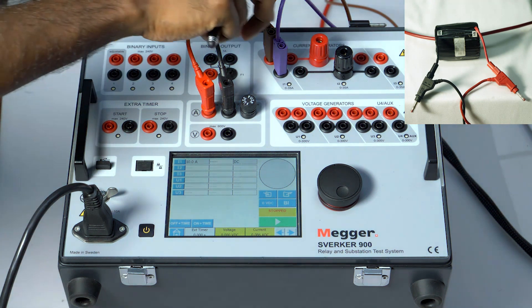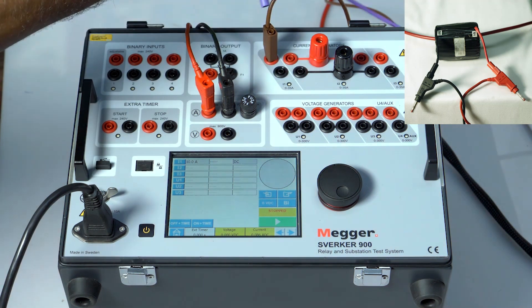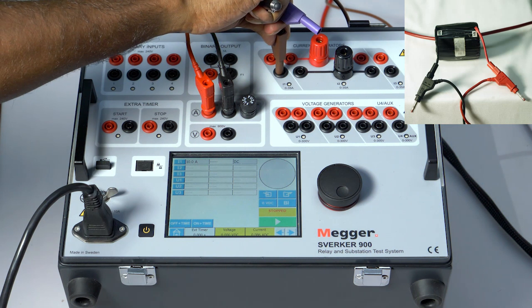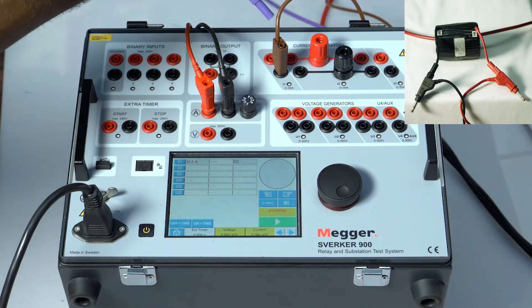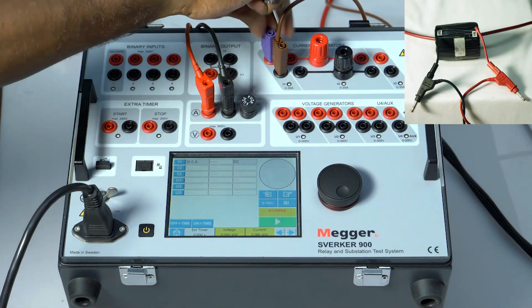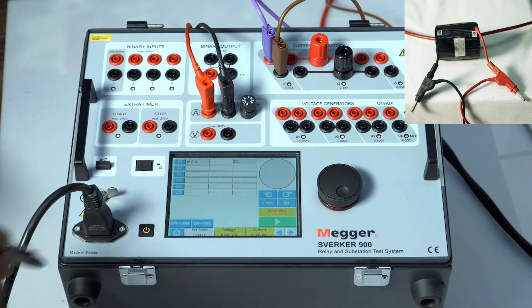Now let me reverse the polarity. Connect the brown and the violet in the opposite direction. Now let me inject for one second. I expect the current to be negative. Stop.